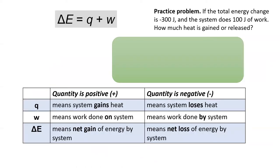In these kinds of problems, the difficult part isn't the math. It's getting the negatives and positives right from the words in the question. Gaining heat, gaining energy, and work done on system all mean positive values. Losing heat, losing energy, and doing work all mean negative values.